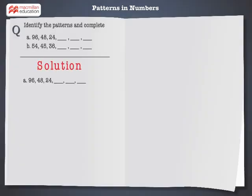In the first pattern, 96 is divided by 2 to get 48. 48 is divided by 2 to get 24. Similarly, to find out the rest of the numbers, we will divide 24 by 2, which gives us 12. 12 divided by 2 gives us 6, and 6 divided by 2 gives us 3.